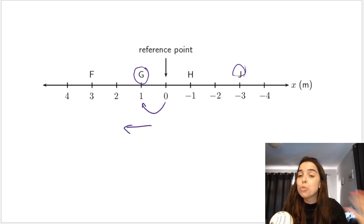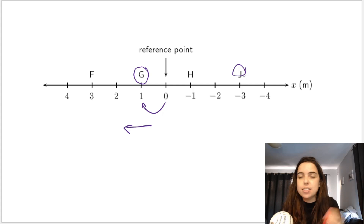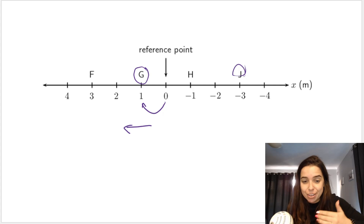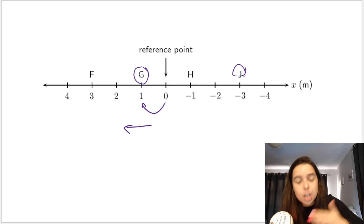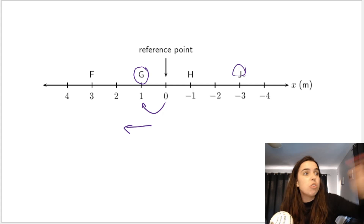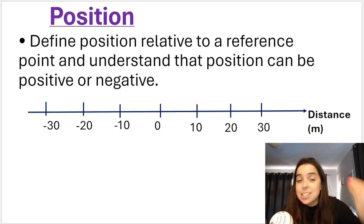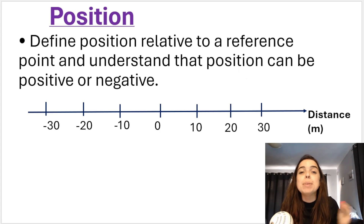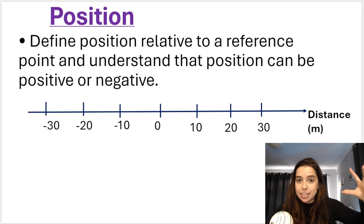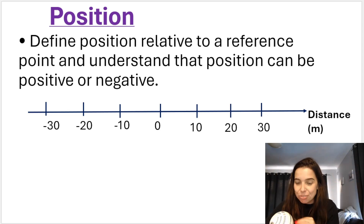If you're explaining to your friend where your favourite shop is, you could say the shop is 600 meters — but your friend would ask '600 meters from what?' You have to give a reference point. So you would say the shop is 600 meters from my home, to the right. We define position relative to a reference point, and because we use a coordinate system, position can be positive or negative.